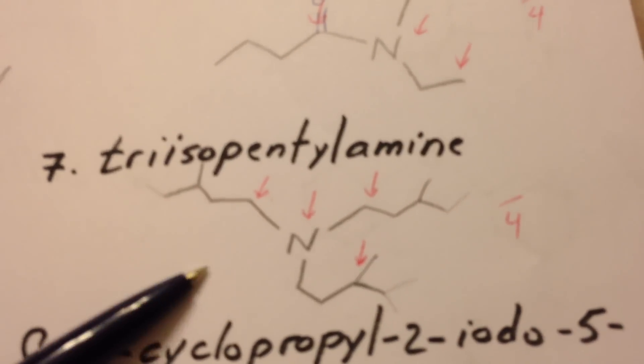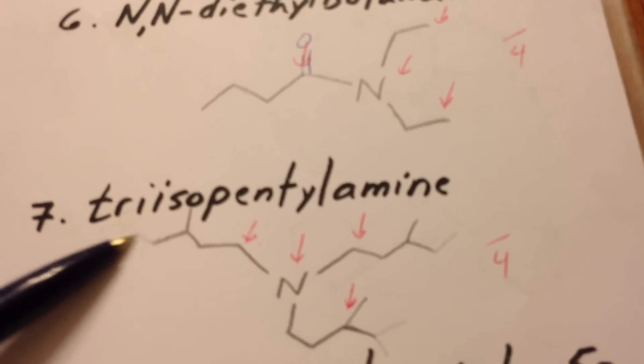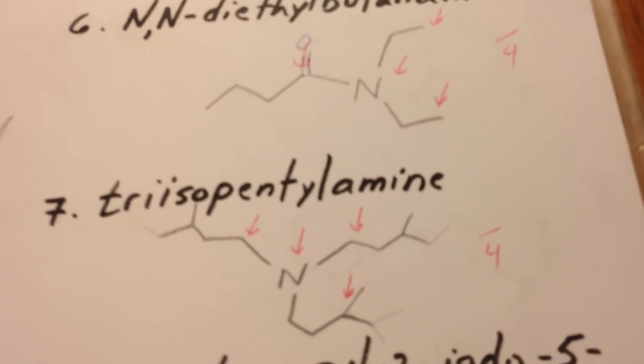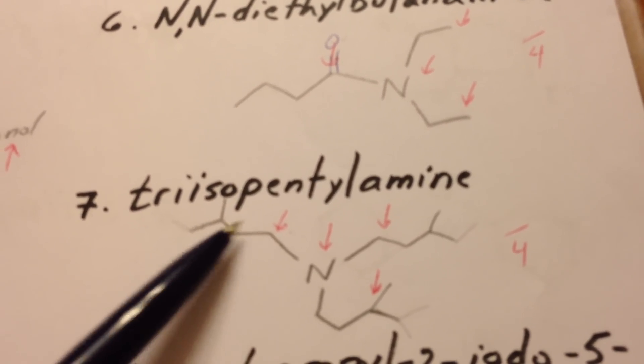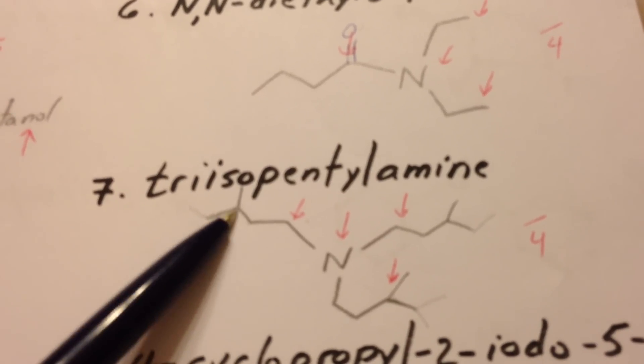The seventh question is triisopentylamine. Isopentyl has five carbons in it. One, two, three, four, five. And it flares at the end. It forms like a little Y.